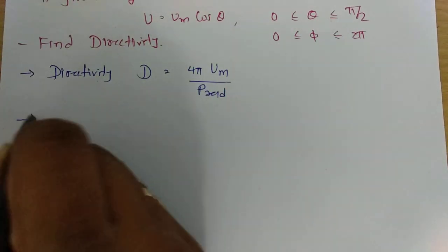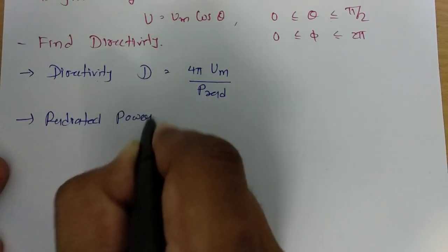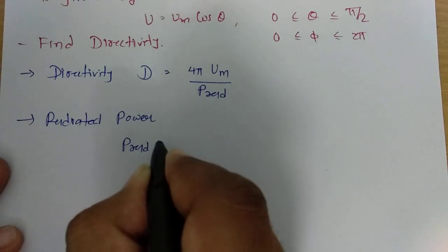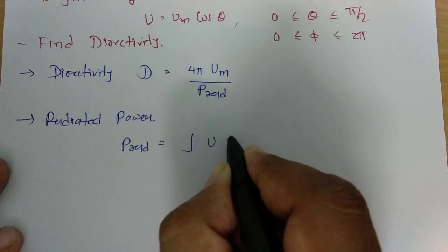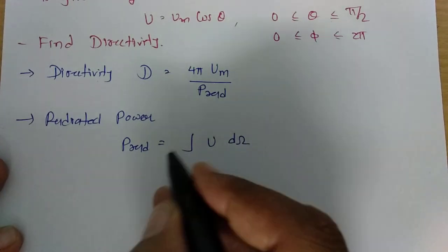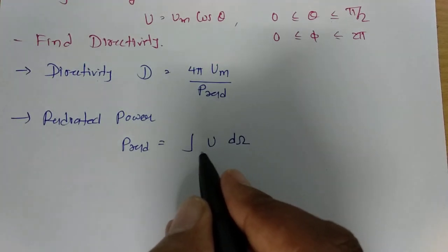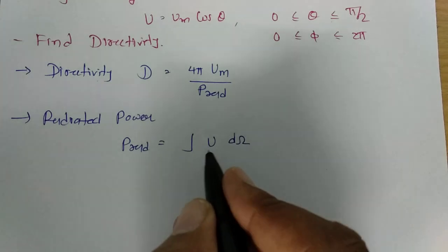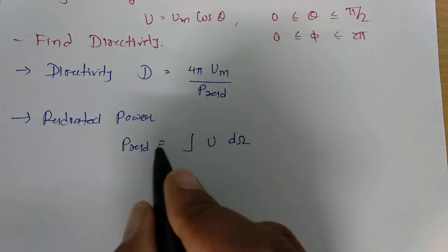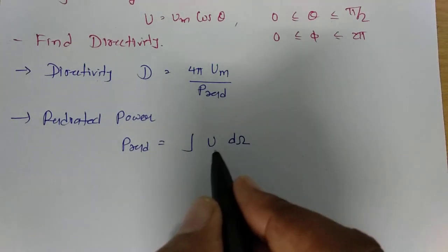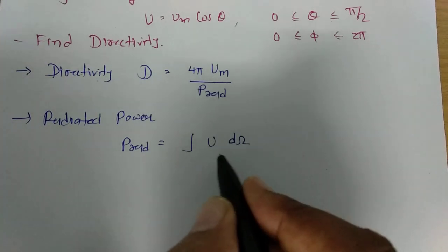Radiated power is the integration of radiation intensity over solid angle. I have already explained the relation between radiation intensity and radiated power in my previous antenna parameters video. So radiated power equals the integration of radiation intensity over solid angle.